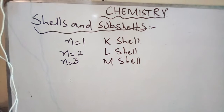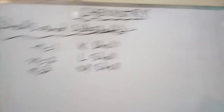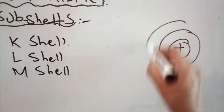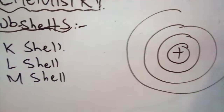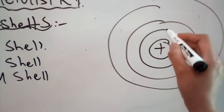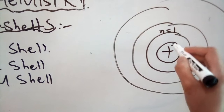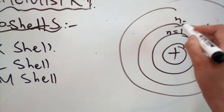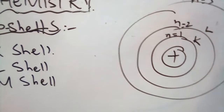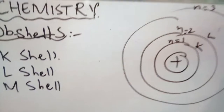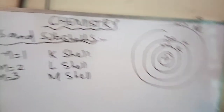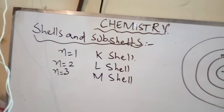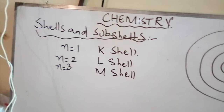And so, shells are those main orbits — for example, this is the nucleus, and electrons revolve around the nucleus in a circular path which are called as shells or orbits. If you see, the first shell is the K-shell, next is L-shell, then there is M-shell and so on. Shells are the main orbits.